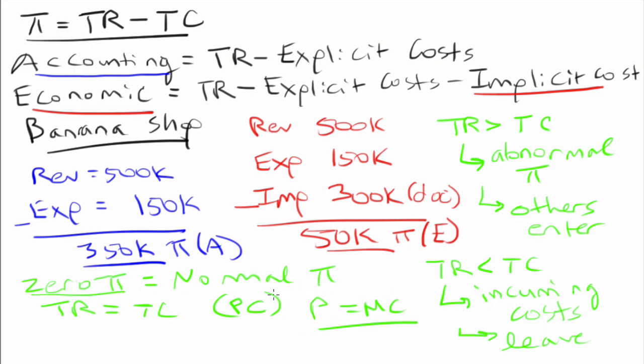So in thinking about the difference between accounting and economic profits, you want to remember that economic profits include implicit costs. And then you want to think about these three different scenarios: scenario one, in which we have abnormal profits; scenario two, in which we're incurring losses; and then scenario three, in which we have zero profit. So that pretty much covers it for this week. Tune in next week for another edition of AP Micro Mondays. For this time, I will see you guys next time.